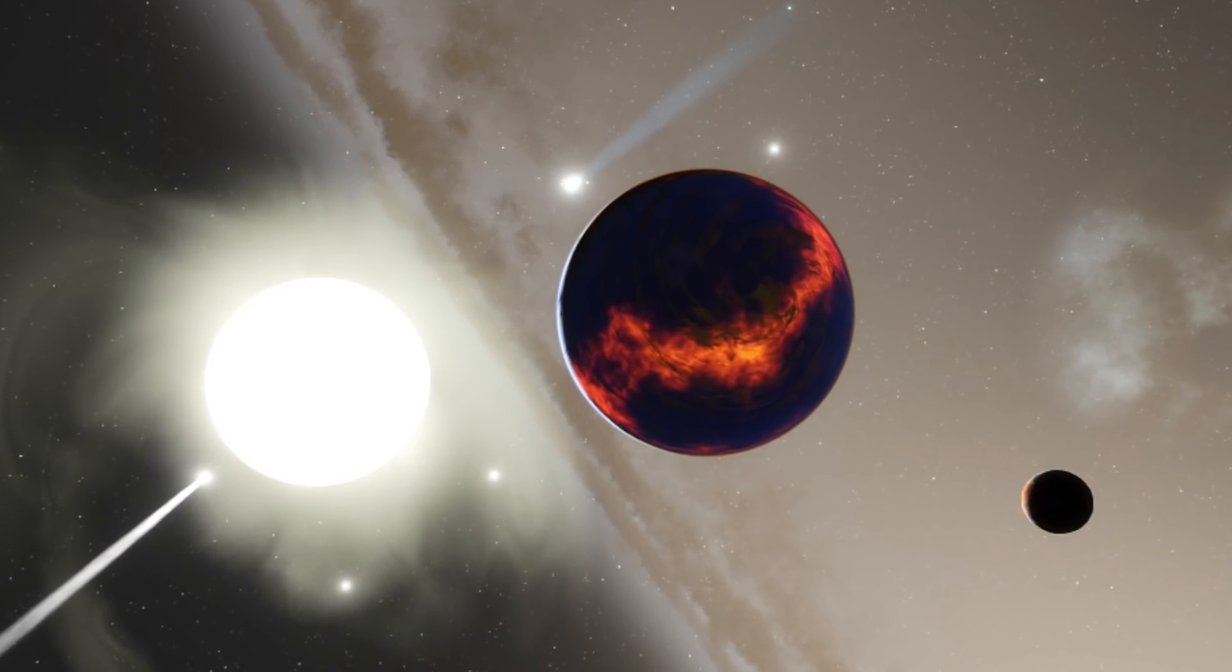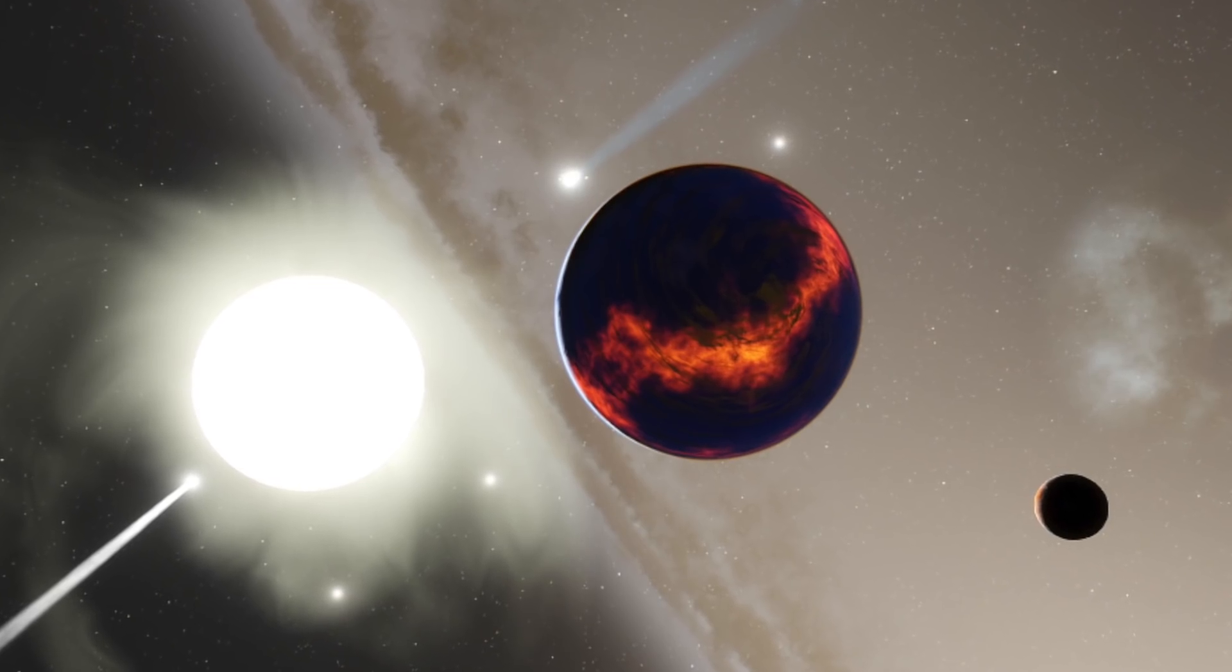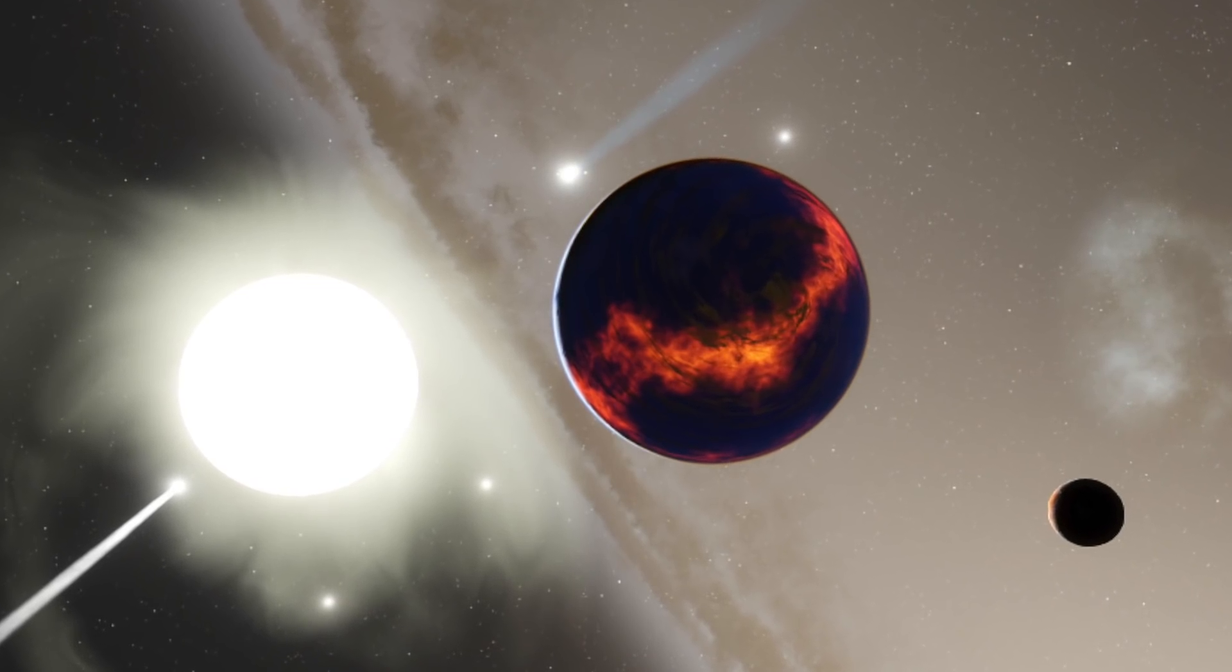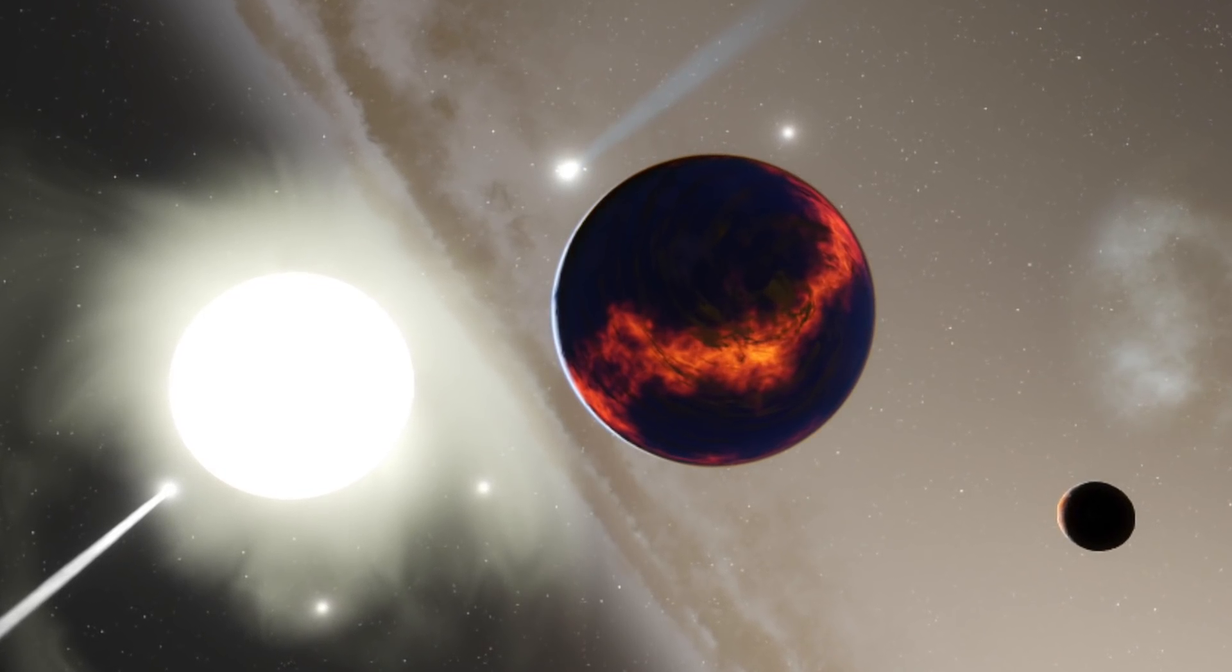For starters, it is almost double the size of the Milky Way's resident gas giant Jupiter and orbits its star once every 30 hours, which is easily one of the fastest orbits yet discovered. Any closer and the gravitational pull from the star would disintegrate the planet.